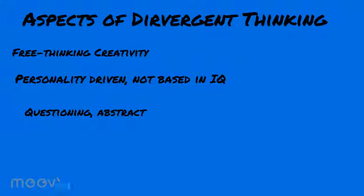The last aspect of divergent thinking — and there are probably many more, but these are the most important — is that divergent thinking is always questioning. It's always abstract. It always asks why, how, and 'give me more on that concept,' drawing things out of the conversation.